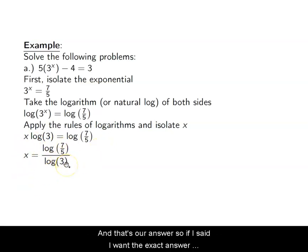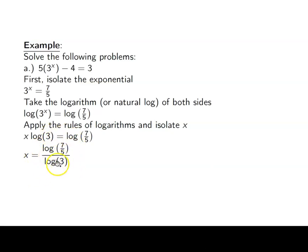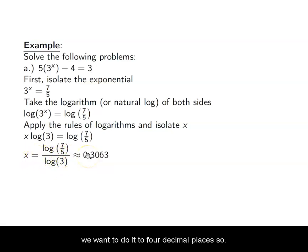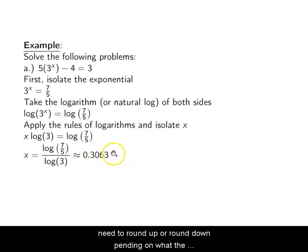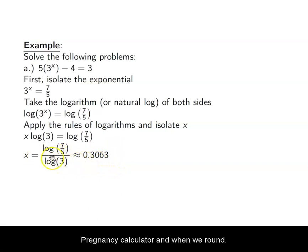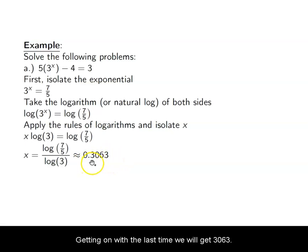If I said I want the exact answer, log(7/5) over log(3) is the answer exactly. Typically though, the decimal approximation is fine, so we want to do it to four decimal places. We don't just cut it off at four decimal places — we need to round up or round down depending on what the fifth value is. When you plug this into your calculator you'll get a long string of values, and when we round we get 0.3063.